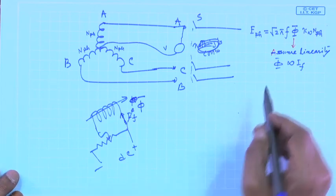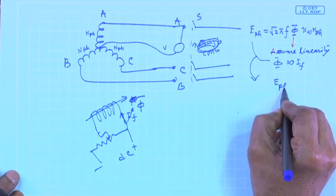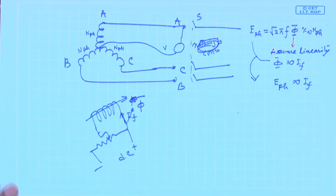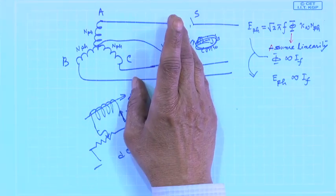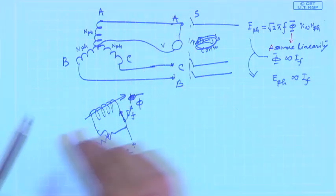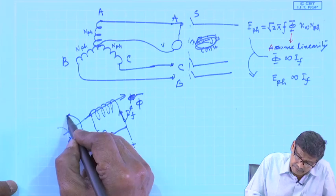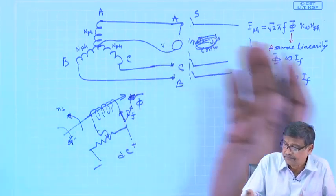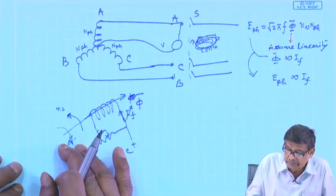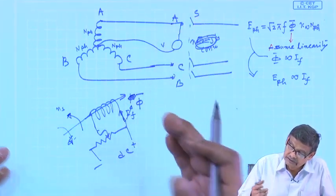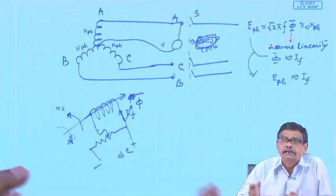Therefore, E_phase is directly proportional to the field current I_F when nothing is connected to the terminals. Running the synchronous machine with a prime mover at synchronous speed — for example, a 2-pole machine at 3000 rpm to generate 50 Hz — the voltage is induced. In the phasor diagram, the flux per pole φ_f (produced by field current) is shown, and the induced voltage phasor lags it by 90 degrees.